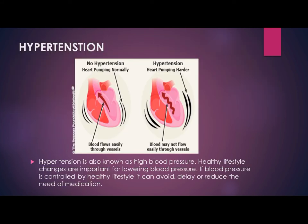The asanas related to hypertension that we are going to study are Tadasana, Vajrasana, Pawanmuktasana, Chakrasana, Bhujangasana, and Shavasana. You should also know the asanas that can reduce back pain, which include Tadasana, Ardha Chandrasana, Vakrasana, Shavasana, and Bhujangasana.